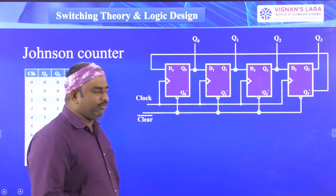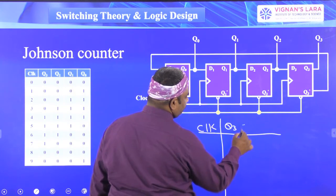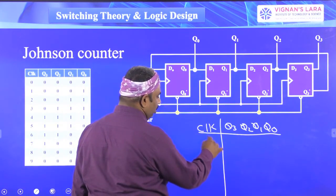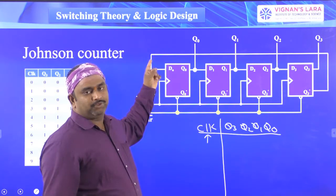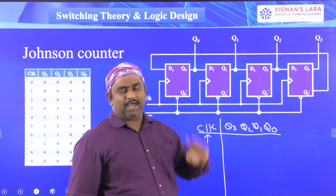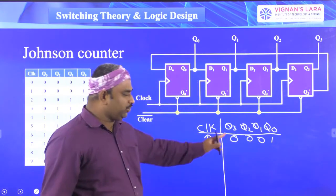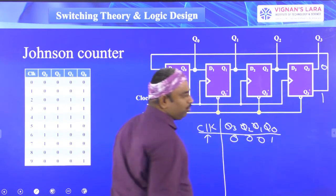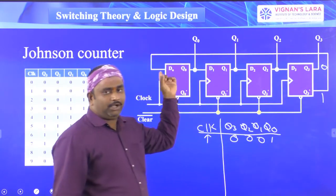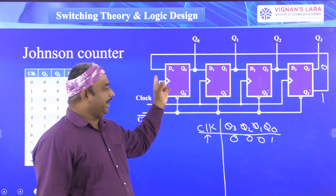Now we will draw the truth table. The clock signal is there, and four outputs Q3, Q2, Q1, Q0 are available. Before the first clock pulse, the initial state is all zeros. Q3 is equal to 0, so Q3-bar is equal to 1. That Q3-bar is connected to D0, making D0 equal to 1. D1 equals 1 because the previous Q0 was 1.